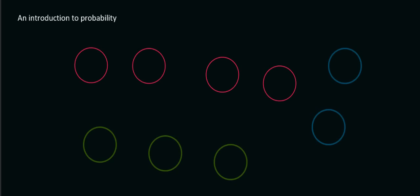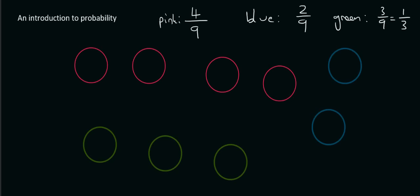Let's say we've got nine balls in a bag, and you have to choose one of them, but you're not allowed to look. Would your chances be better in choosing a pink, a blue, or a green? Which one are you most likely going to choose? Well, because there's more pink, that would give you the better chance. So the chances to choose a pink one would be four out of nine. The blue would be two out of nine, and the green would be three out of nine, which simplifies to a third. Probability is the number of things for that particular color divided by the total.